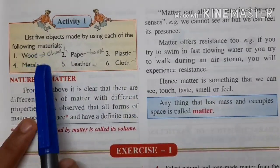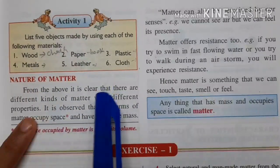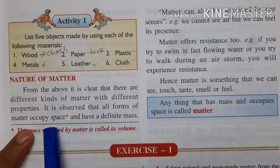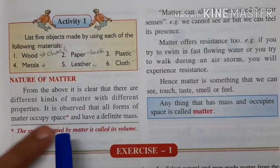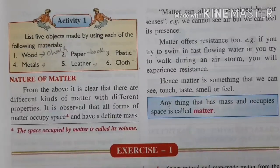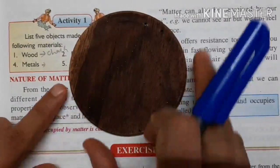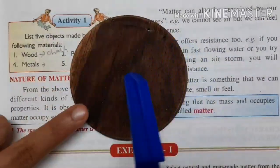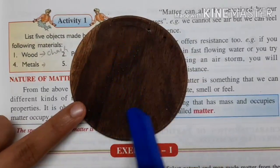You know the basic properties of wood, metal, leather, and paper. Now it is observed that all forms of matter occupy space. What is the meaning of 'space'? For example, I have this object and I'm putting it here — this much space is occupied by this material.